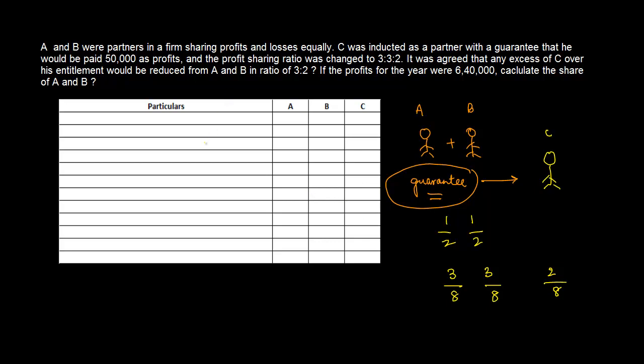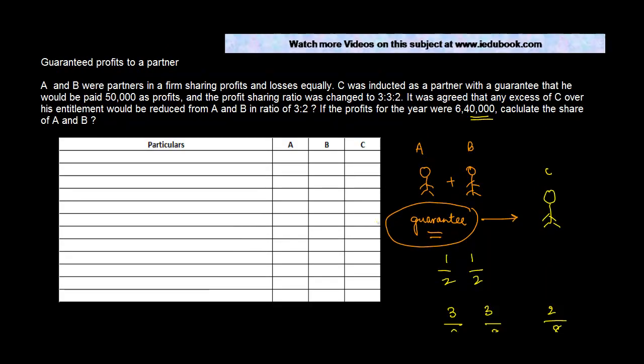So now if you see the actual profits, what were the actual profits? The actual profits were 640,000. So the actual share of the partners out of 640,000 was 3 by 8, 3 by 8 and 2 by 8.